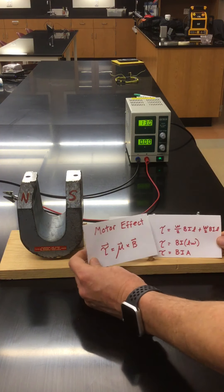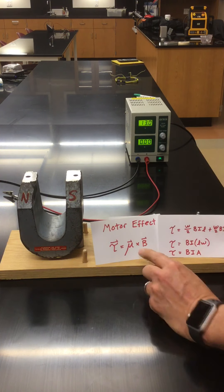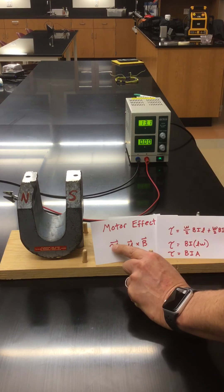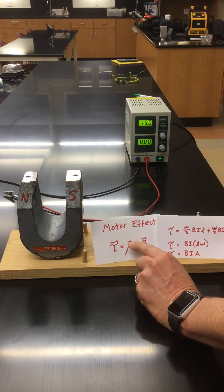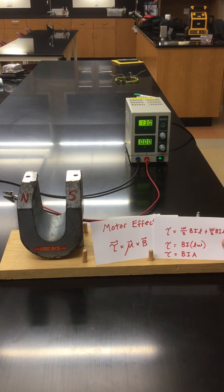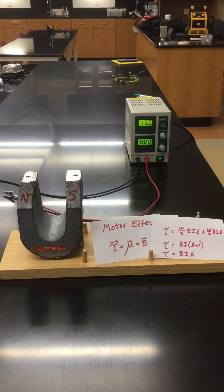Notice, just as I said earlier, that's all mu is, is the product of I and A. So this formula is telling us torque is BIA, and this formula says torque is BIA. Okay. Pretty cool. Thank you.